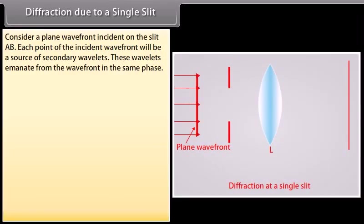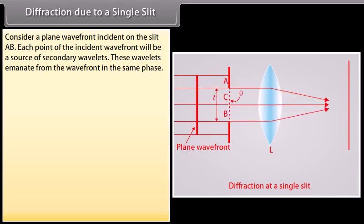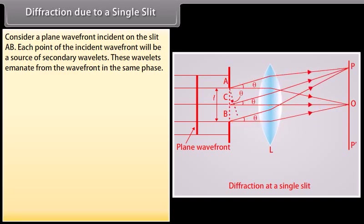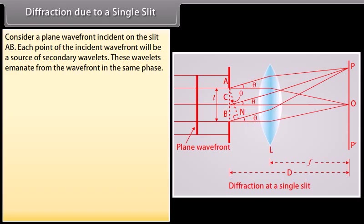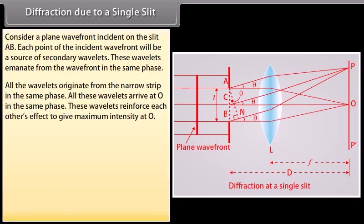Consider a plane wave front incident on the slit AB. Each point of the incident wave front will be a source of secondary wavelets. These wavelets emanate from the wave front in the same phase. To understand the formation of central maximum, the slit can be imagined to be divided into a number of very narrow strips of equal width parallel to the slit. All the wavelets originating from each narrow strip are in the same phase and arrive at point O in the same phase, reinforcing each other's effect to give maximum intensity at O.